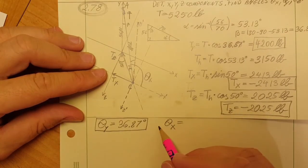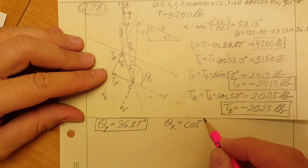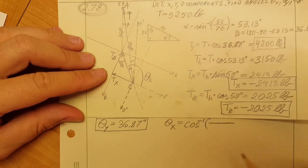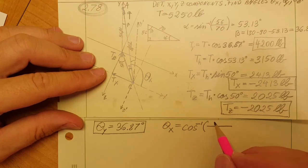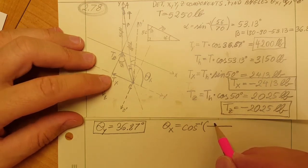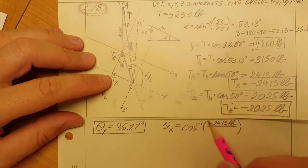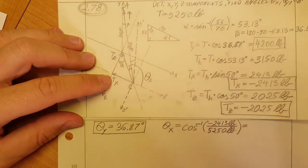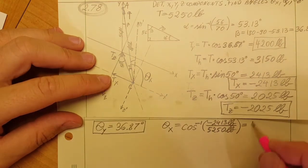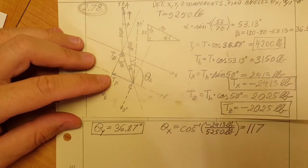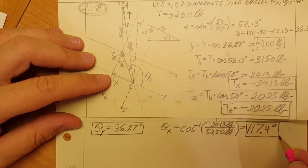We're going to use cosine inverse, which equals T_x divided by T. That's negative 2413 pounds divided by 5250 pounds, and this gives us 117.4 degrees. We found our second angle, theta x.